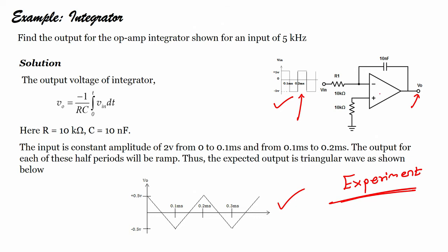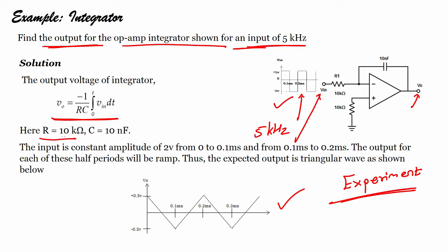For this particular problem, we are asked to find the output for the op-amp integrator shown in the figure for an input of 5 kilohertz. R = 10 kΩ and C = 10 nF are given. The peak-to-peak voltage is 2 volts, constant from 0 to 0.1 milliseconds and from 0.1 to 0.2 milliseconds. The output for each half period will be a ramp, and thus the expected output will be triangular.